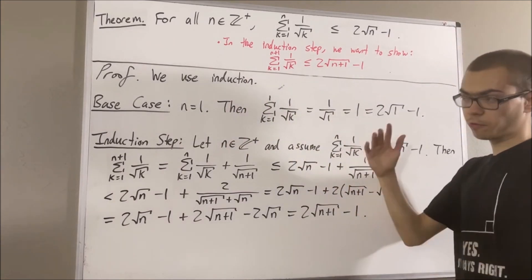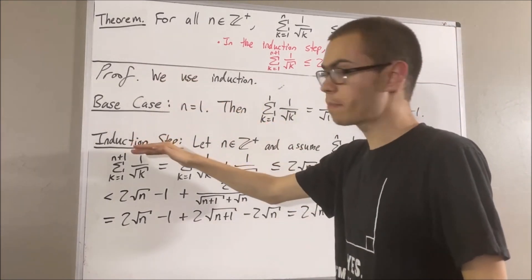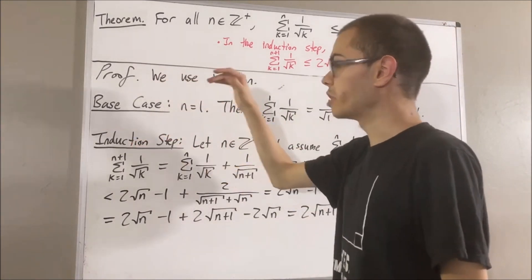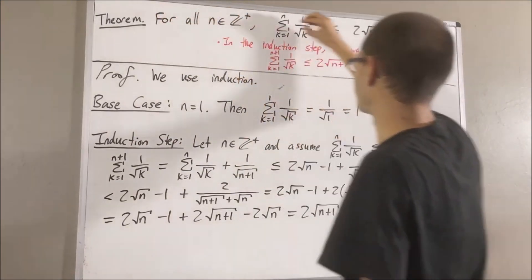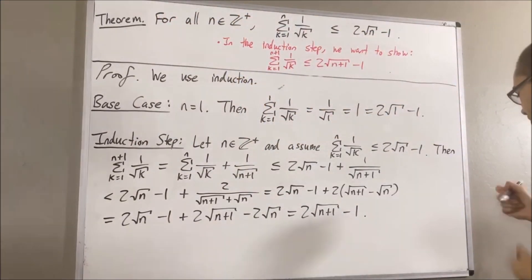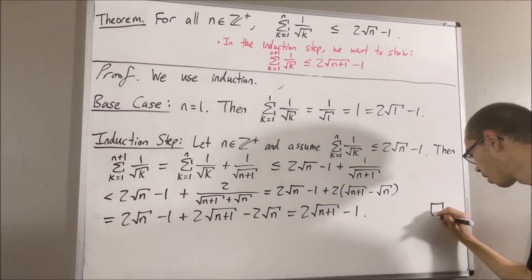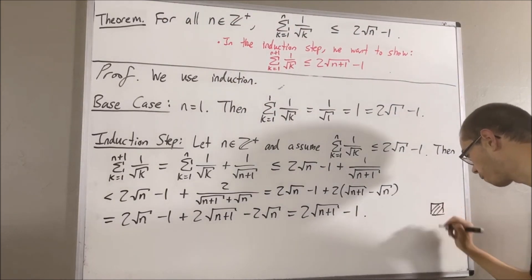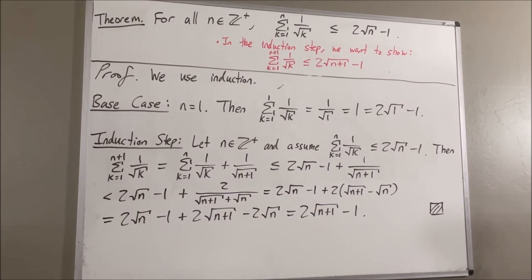Because we've completed both the base case and the induction step, this closes the induction. Therefore, we have proven that this statement is true for all positive integers n. This completes the proof, and that's pretty much it for this video.